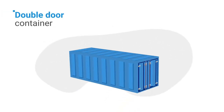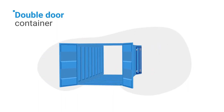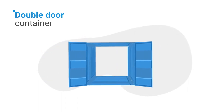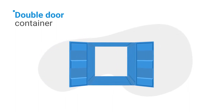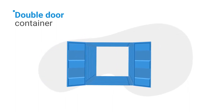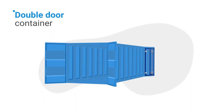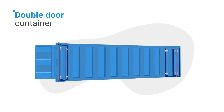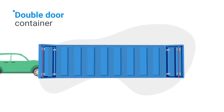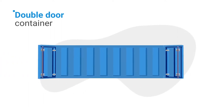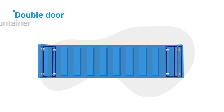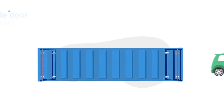3. Double Door Container. The double door container has doors at each end, creating a tunnel. This makes it easier to load and unload, as goods can be accessed from either end of the container. For example, a car can be driven in, and then simply driven out.